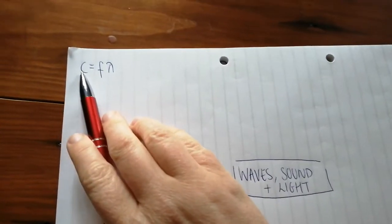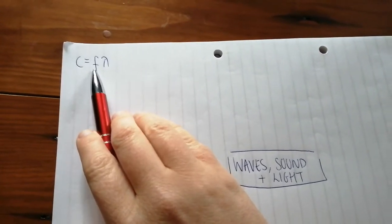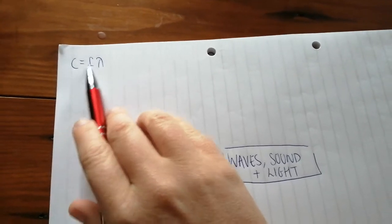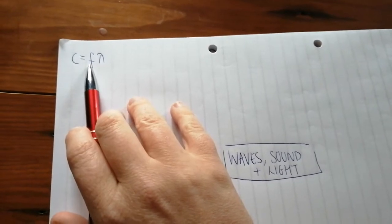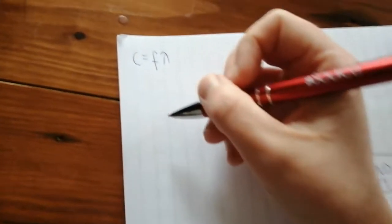The speed of a wave is equal to the frequency of the wave multiplied by the wavelength of the wave. Now using this formula is very, very common in ordinary level. So I'm going to give two ordinary level years where you will have to use this formula.